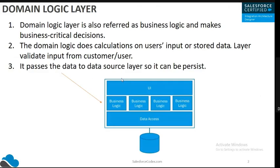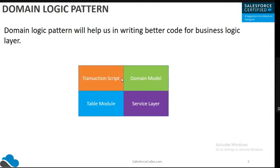You can imagine how important this logic layer is. Since it is that important, our system's design should be as good as possible, so that it will not only work in the current scenario but also in future scenarios as well. For that, we have to implement some kind of pattern while writing code. In the domain logic layer, we can implement four types of patterns: first is Transaction Script, second is Domain Model, third is Table Module, and then we have Service Layer.